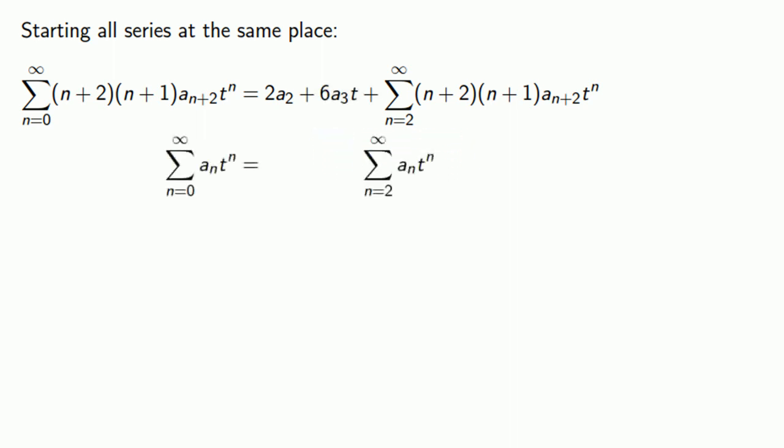For the other series, we want to start at n equals 2, so we have to split off the n equals 0 term and the n equals 1 term. And so now these two series can be rewritten as a series that starts at n equals 2 plus some leftover bits.